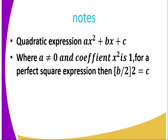It is ax² + bx + c, where a ≠ 0. The coefficient of x² can be one or more than one. When the coefficient of x² is equal to one, for a perfect square expression, [b/2]² = c.